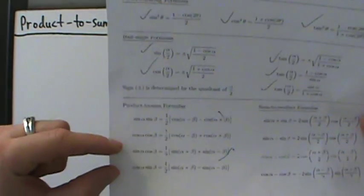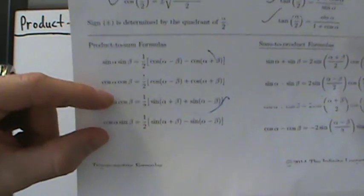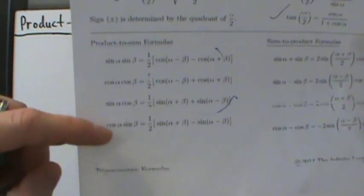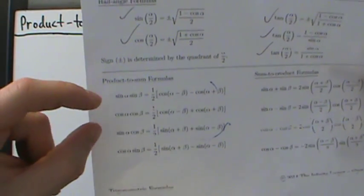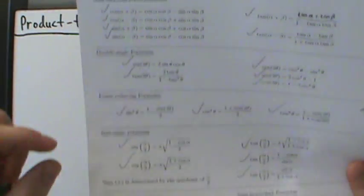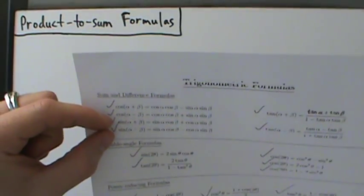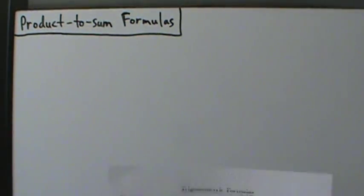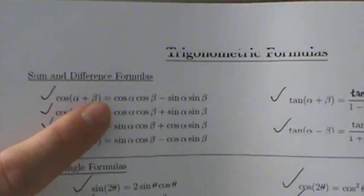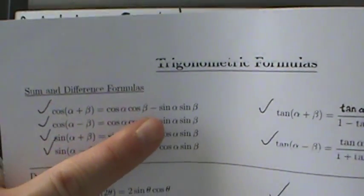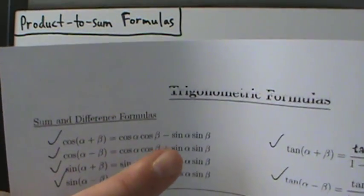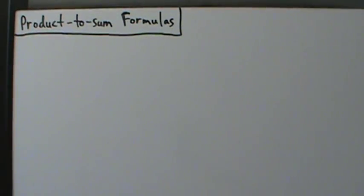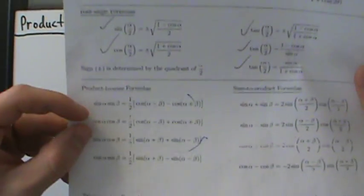There are four of these product-to-sum formulas, but the third and the fourth one are pretty much the same thing — the fourth one is a little bit redundant, and we'll talk about why when we get there. We're going to establish the first two using the sum and difference formulas for cosine, and then the second two we can get from the sum and difference formulas for sine.